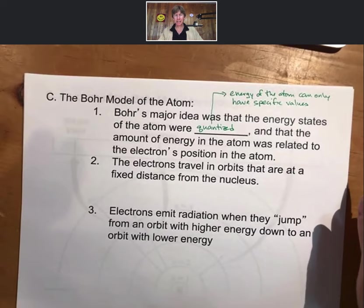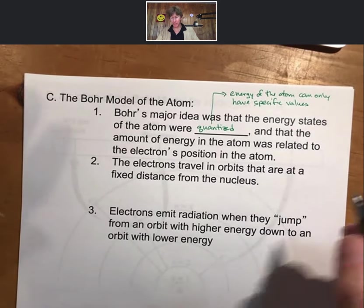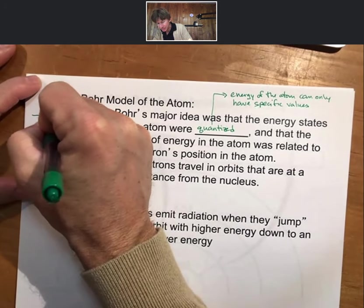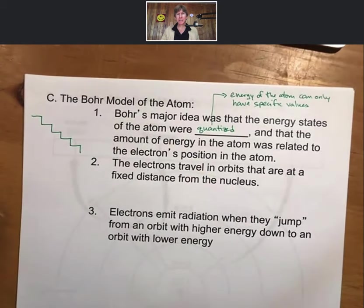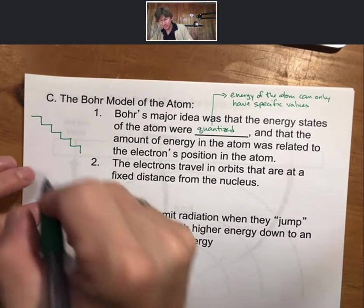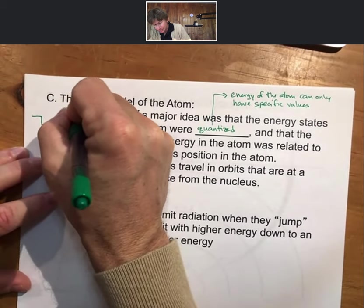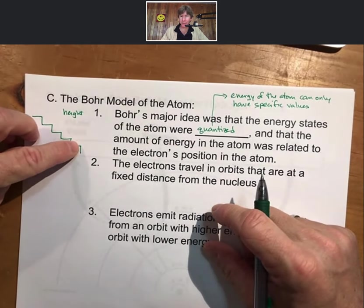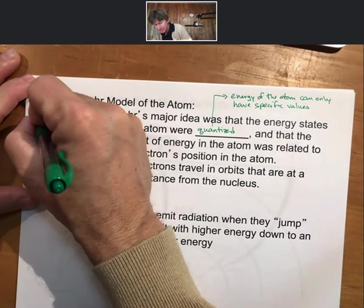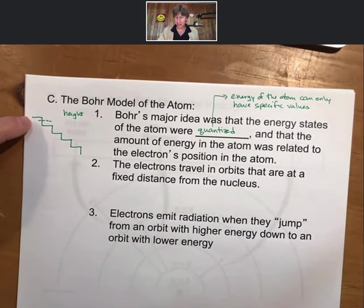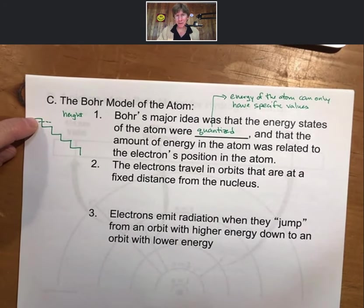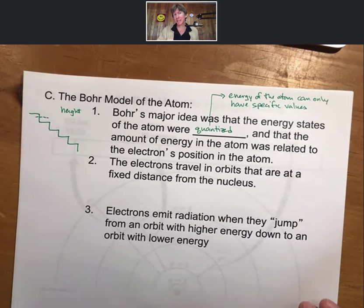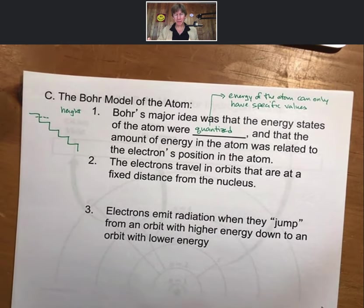As an analogy — not a perfect one — if you think about going up and down a set of stairs, your height can more or less only have specific values as your feet land on each step; it's very difficult to be at an in-between level. The difference, and why this is not a perfect analogy, is that for the electron, it's impossible for it to have these in-between energy values.